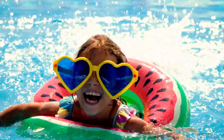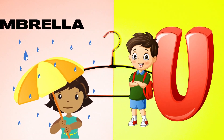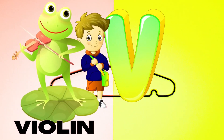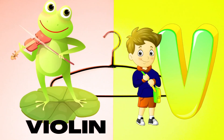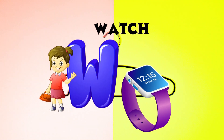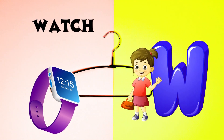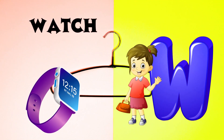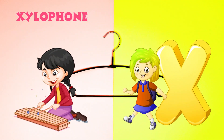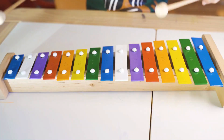U is for Umbrella, U-U-Umbrella. V is for Violin, V-V-Violin. W is for Watch, W-W-Watch. X is for Xylophone, X-X-Xylophone.